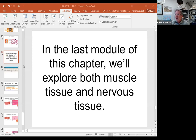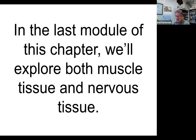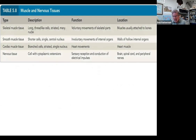We're ready to finish up chapter 5. In this last module we want to talk about the remaining two types of tissue: muscle and nervous tissue. We have already discussed epithelial and connective tissues. This table does a good job giving you a broad overview of the major descriptions, functions, and locations of both muscle and nervous tissue, so if you're looking for a quick synopsis this would be a good table to reference.